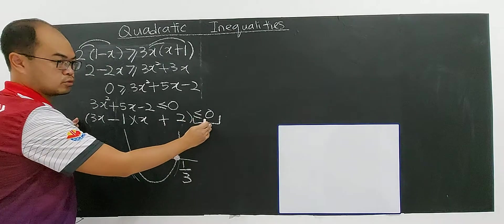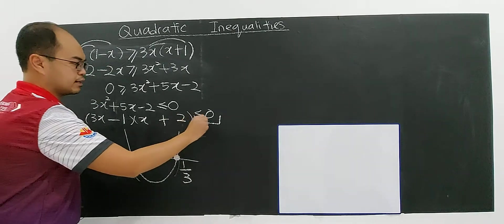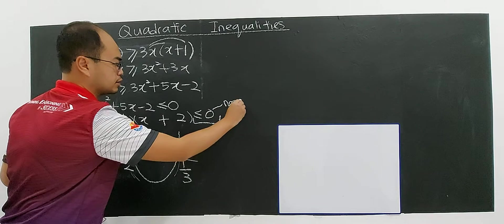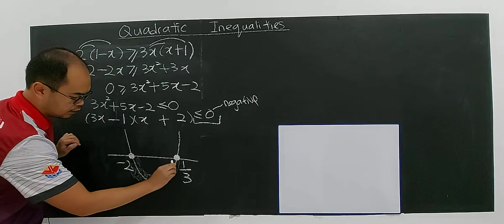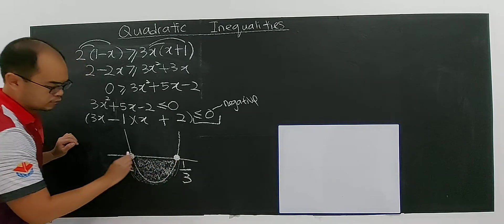Means the value of y is negative. If it's negative, so I'm going to take the region below. This region.